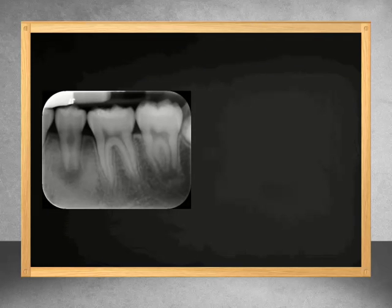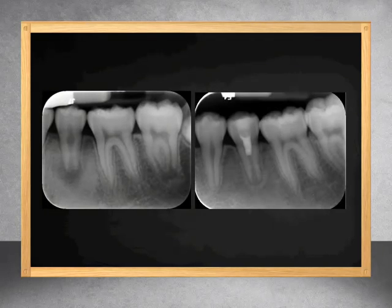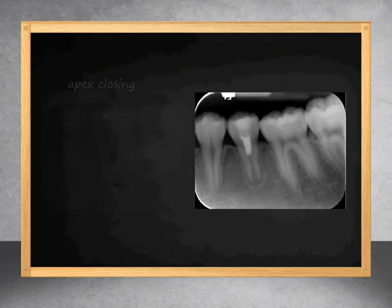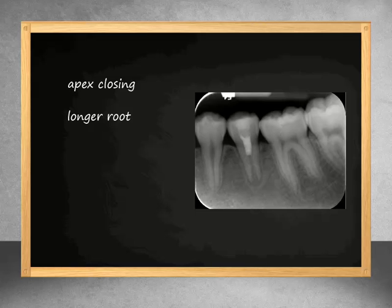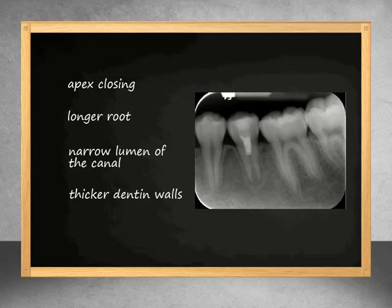Six months later, a mineralized material had partially closed the apex, lengthened the root, narrowed the canal space lumen, and thickened the dentinal walls. The tooth has remained asymptomatic and disease-free.